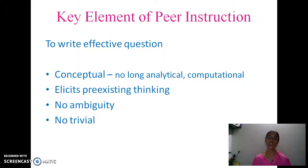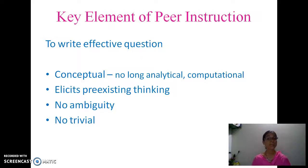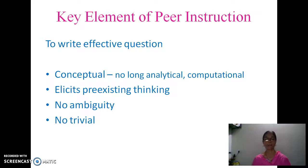The key element of peer instruction is the effective question. What makes a question effective? It must be conceptual — not a long, descriptive, analytical, or computational question. It elicits pre-existing thinking, it cannot be ambiguous, and two options cannot be correct at the same time, otherwise you cannot take the vote properly. It should not be trivial — the question should require students to apply their knowledge.